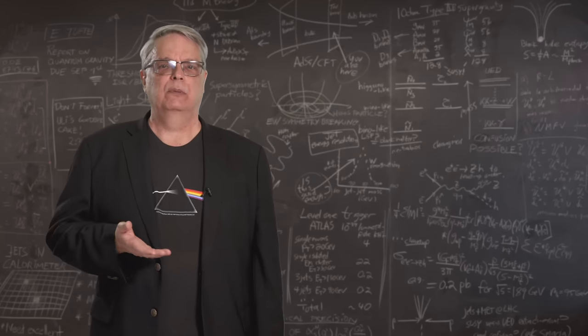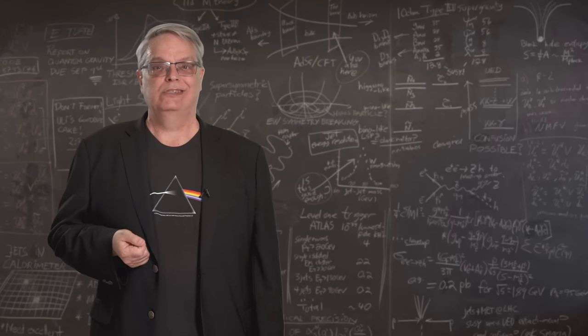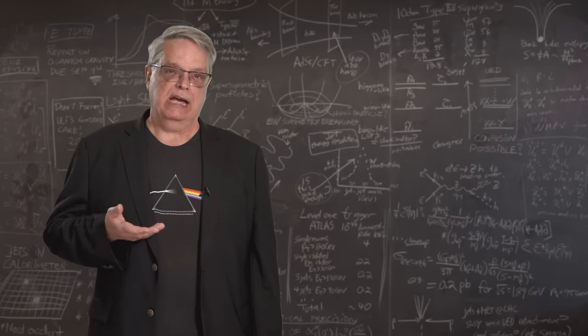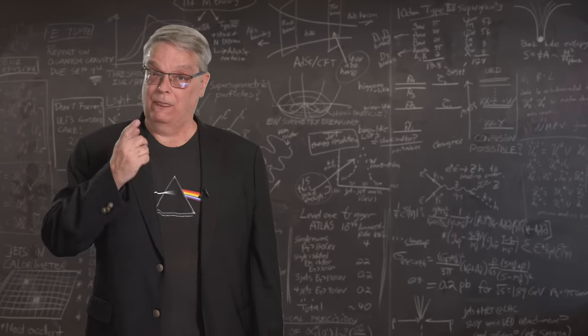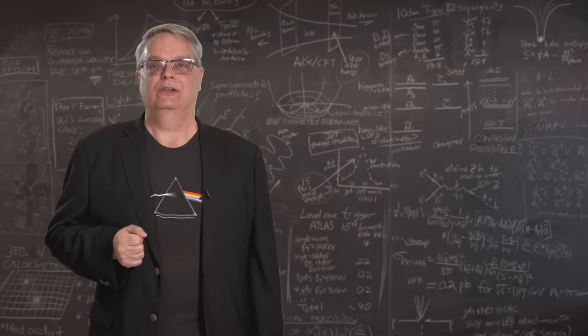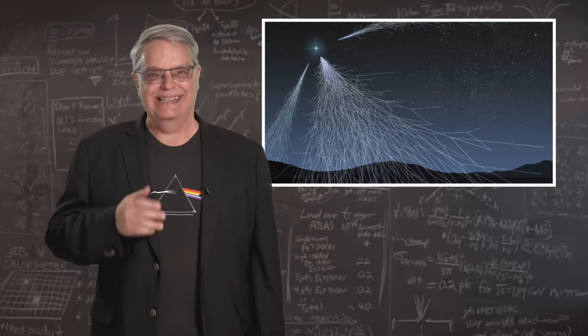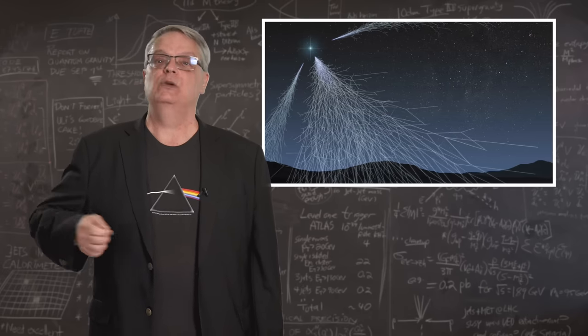Of course, particle accelerators capable of making muons are big, which makes it challenging to move them to scan large objects, so we need to find a natural source of muons. And luckily, Mother Nature is helping us out here. It turns out that a type of radiation from space called cosmic rays is exactly what we want- high-energy muons.